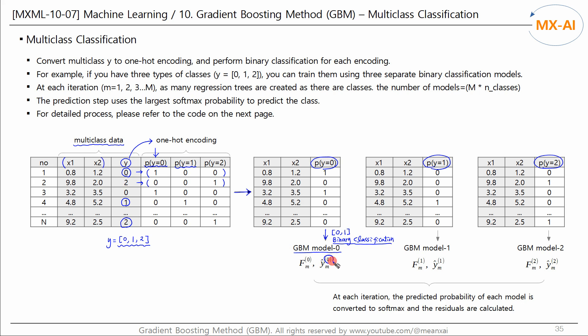Then, we can get three prediction results from each model. At each iteration, we use the softmax function to normalize each predicted probability. Calculate the residuals and use these residuals to create new models in the next iteration.